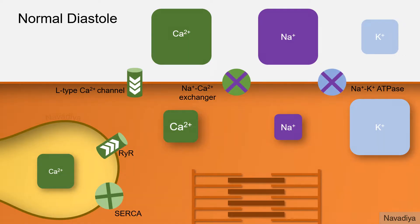During diastole, calcium is pumped back to sarcoplasmic endoplasmic reticulum. The calcium that enters from outside is extruded back by sodium calcium exchanger.